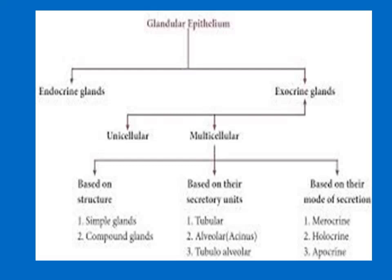Exocrine glands are further divided into unicellular and multicellular types based on structure. Unicellular examples include goblet cells; multicellular types include tubular and alveolar forms. Based on mode of secretion, exocrine glands are classified as merocrine, holocrine, and apocrine.